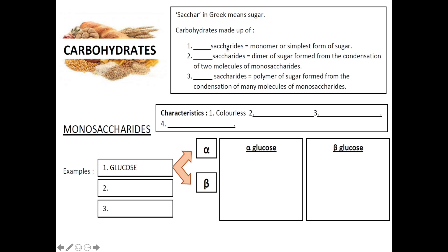Carbohydrates made up of monosaccharides, which refers to the monomer or the simplest form of sugar. The dimer of sugar, formed from the condensation of two molecules of monosaccharides, is known as disaccharides. A polymer of sugar formed from the condensation of many molecules of monosaccharides is known as polysaccharides.